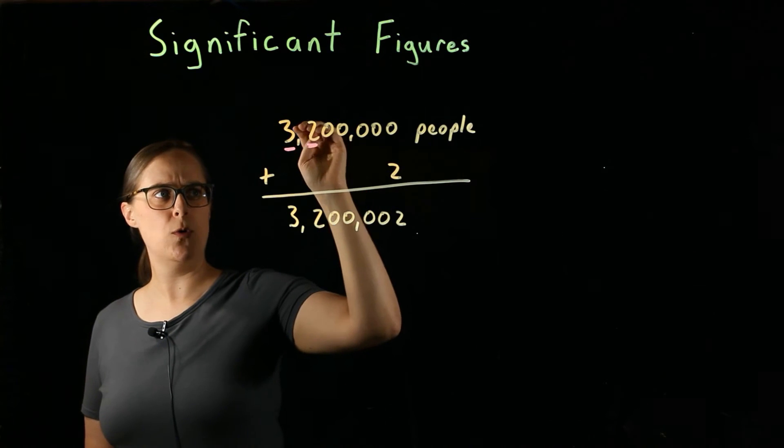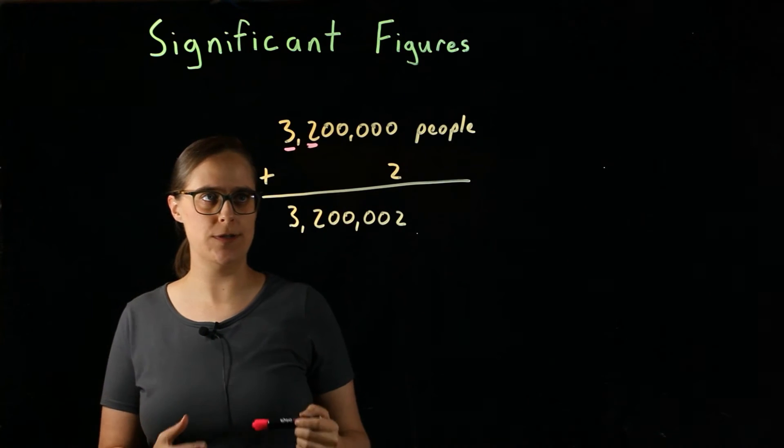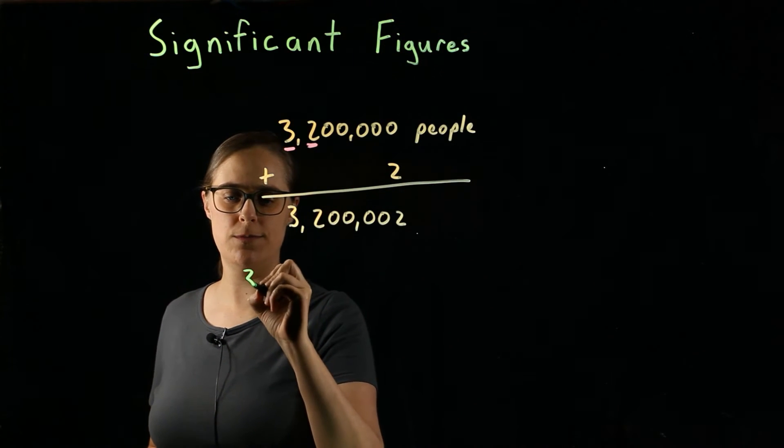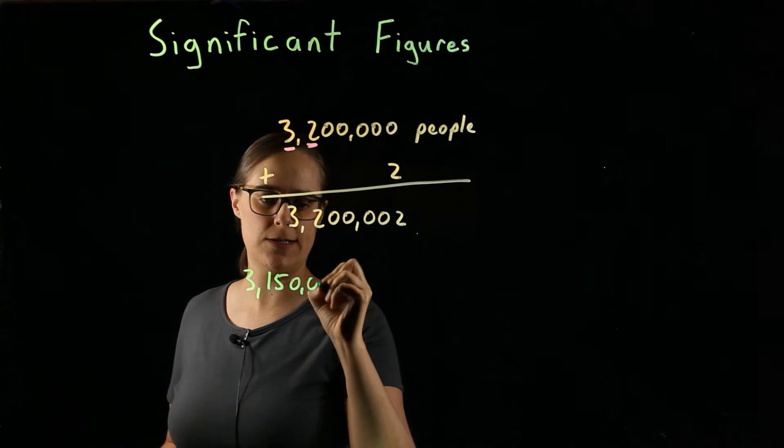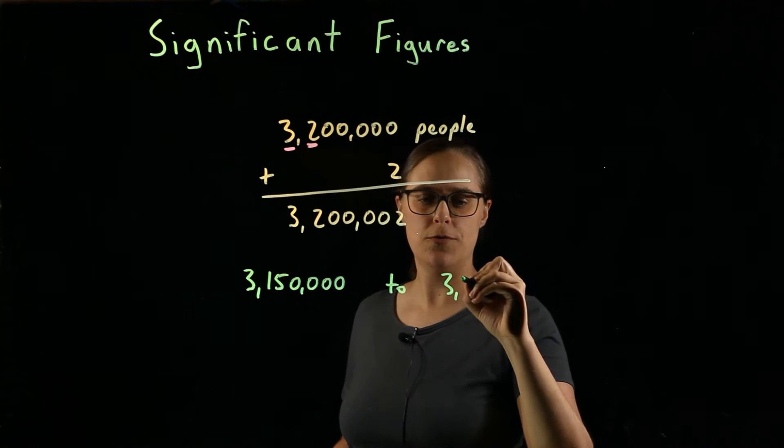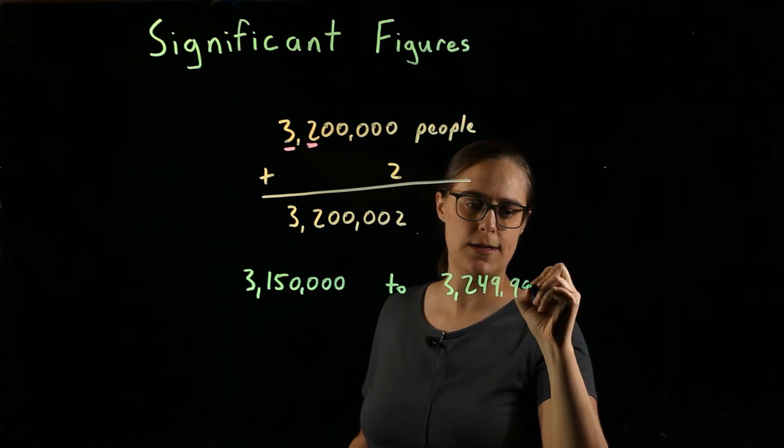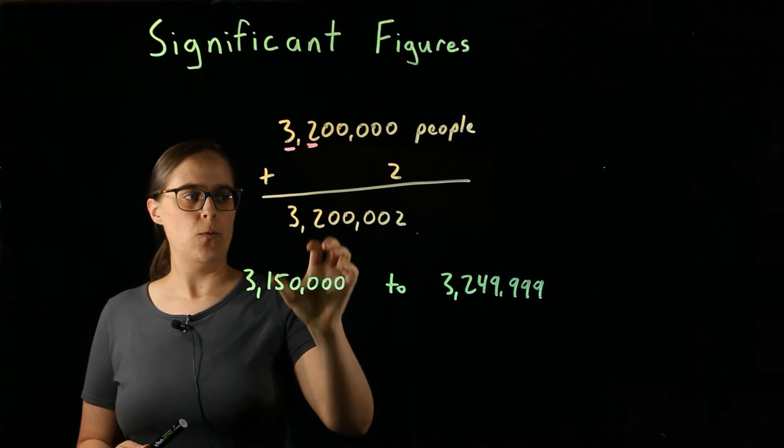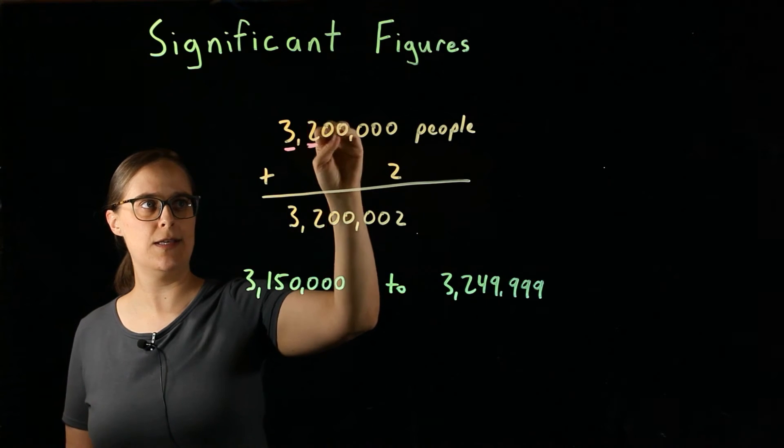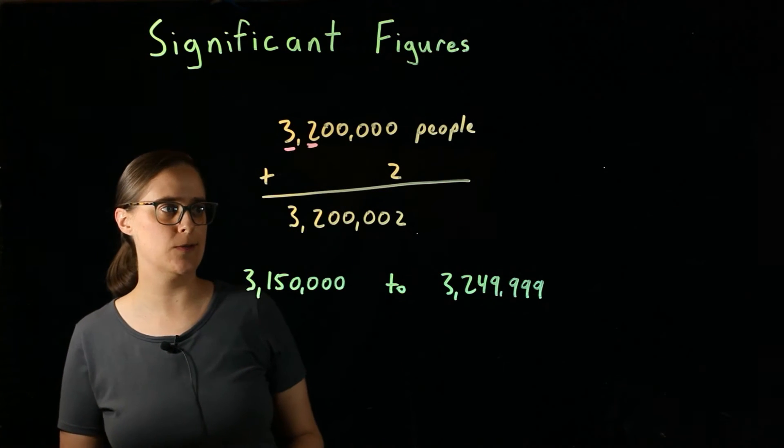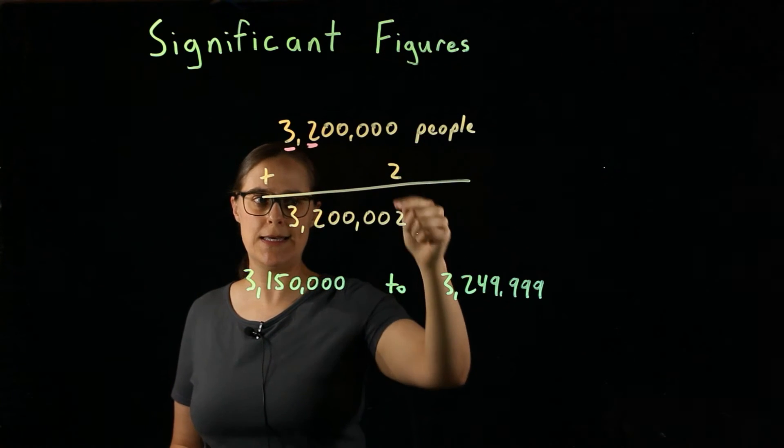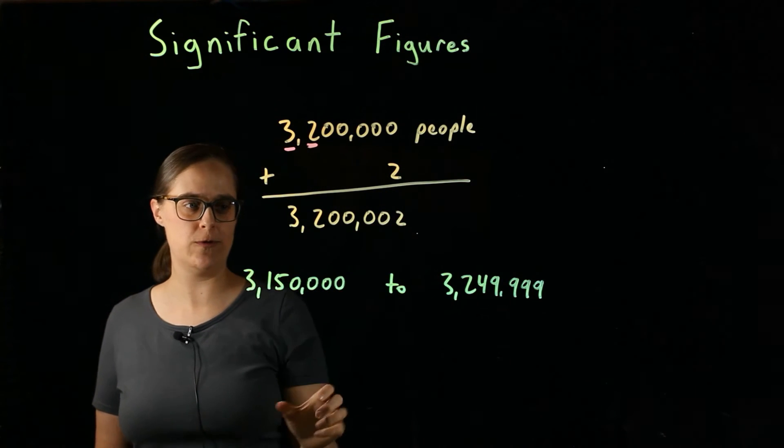Let's think about what numbers we could possibly round to be 3,200,000. On the low end, this could be 3,150,000, all the way up to the high end, it could be 3,249,999. We have a range of about 100,000 numbers that can all be rounded to 3,200,000. It's not really valid for me to add 2 to this 0 at the end and assume that I know that that's a 2 for sure. It could be a giant range of numbers.